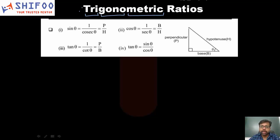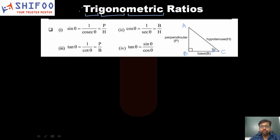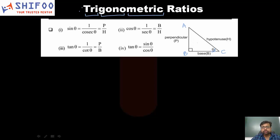Let us consider a triangle ABC as shown. You have a triangle ABC which is right-angled at B. If the angle C is considered as theta, then sin of theta is the length of the perpendicular divided by the hypotenuse. There are three terms here: hypotenuse, perpendicular, and base. In a right-angle triangle, the greatest side is called the hypotenuse.